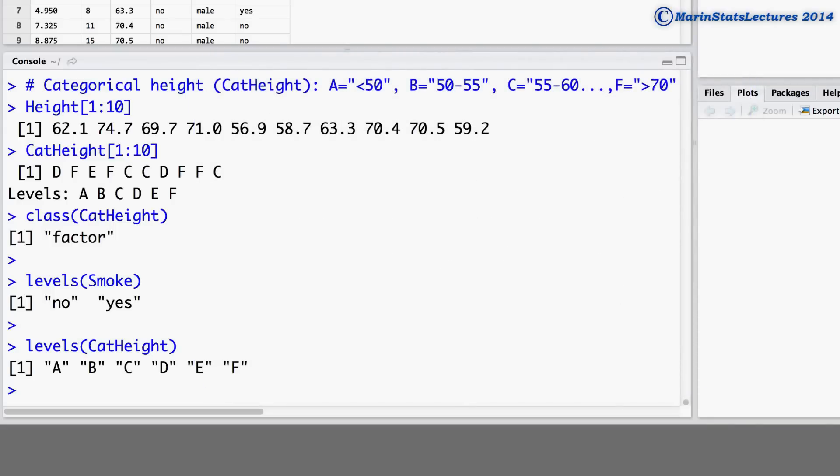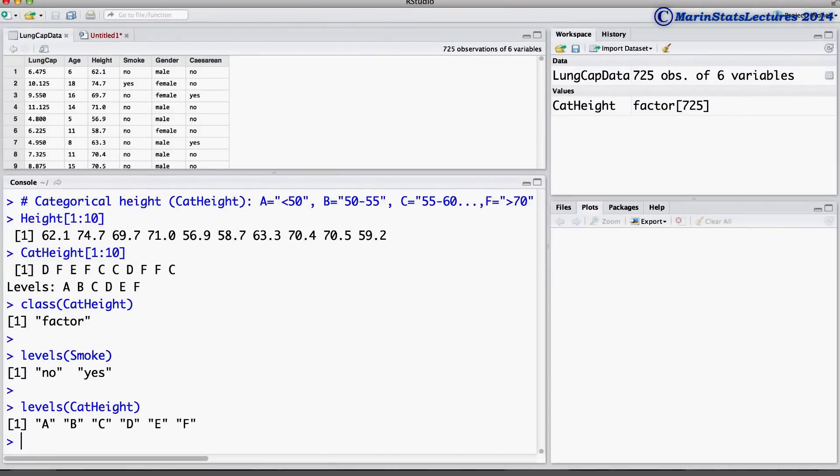These 5 dummy or indicator variables allow us to identify which of the 6 height categories an individual falls into. In a moment we'll look at the use of these in a regression model, but first let's take a look at the mean lung capacity for each of the groups formed by categorical height.